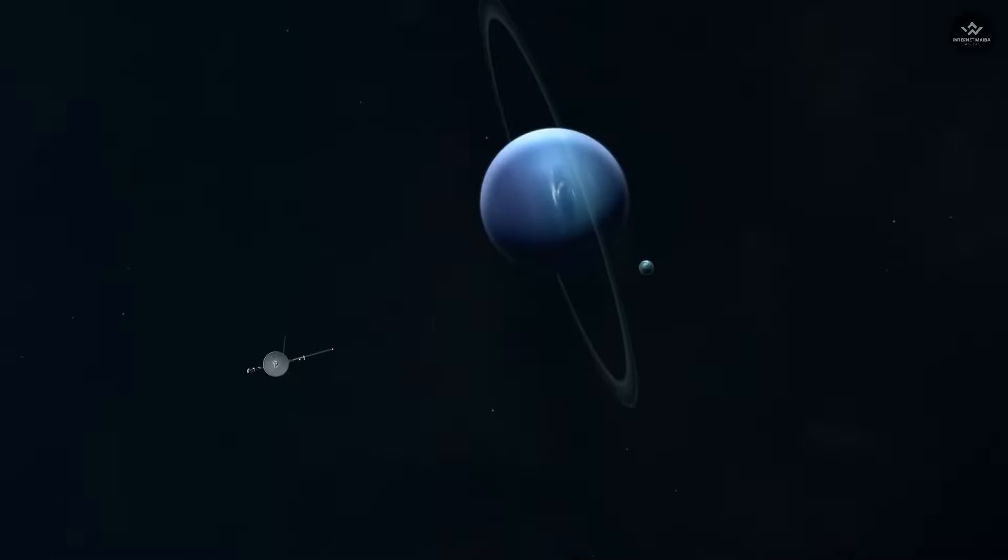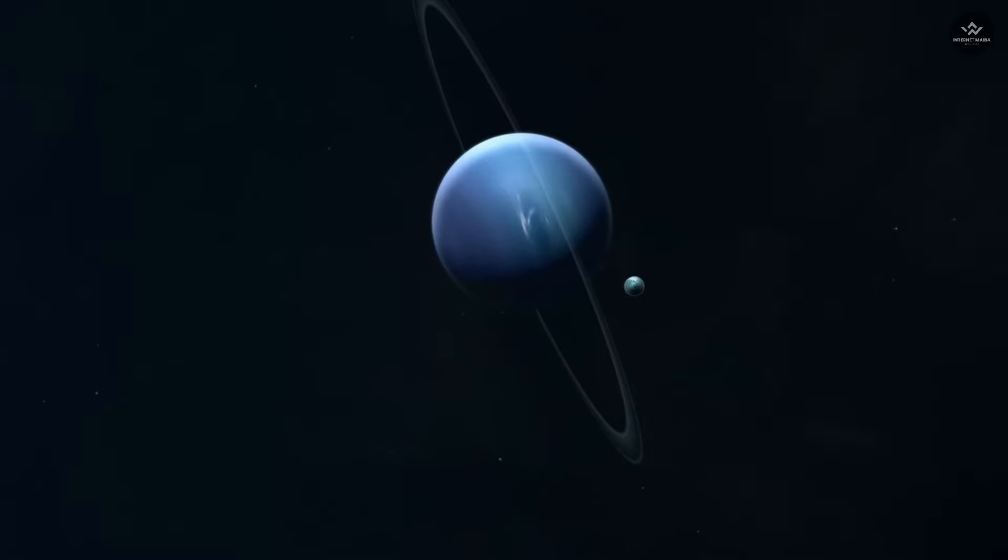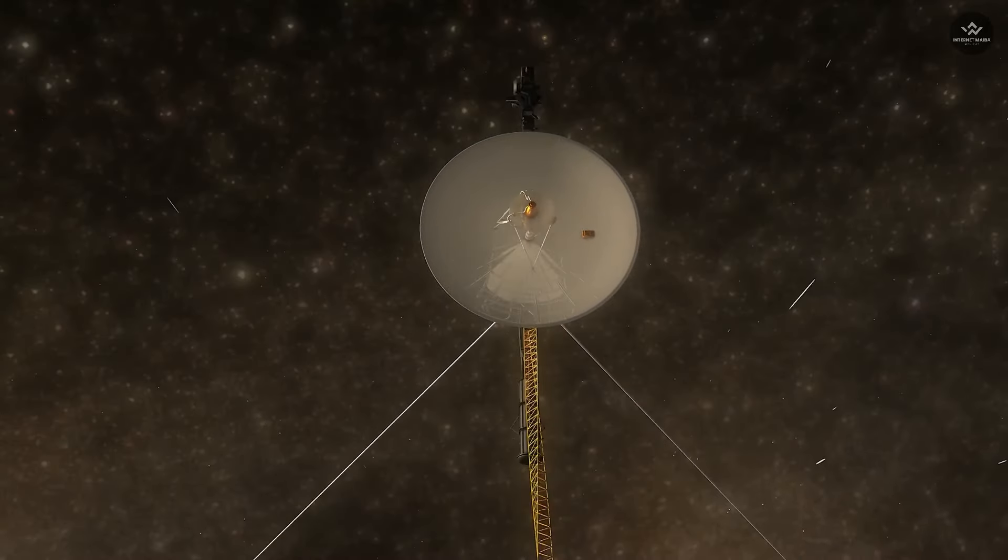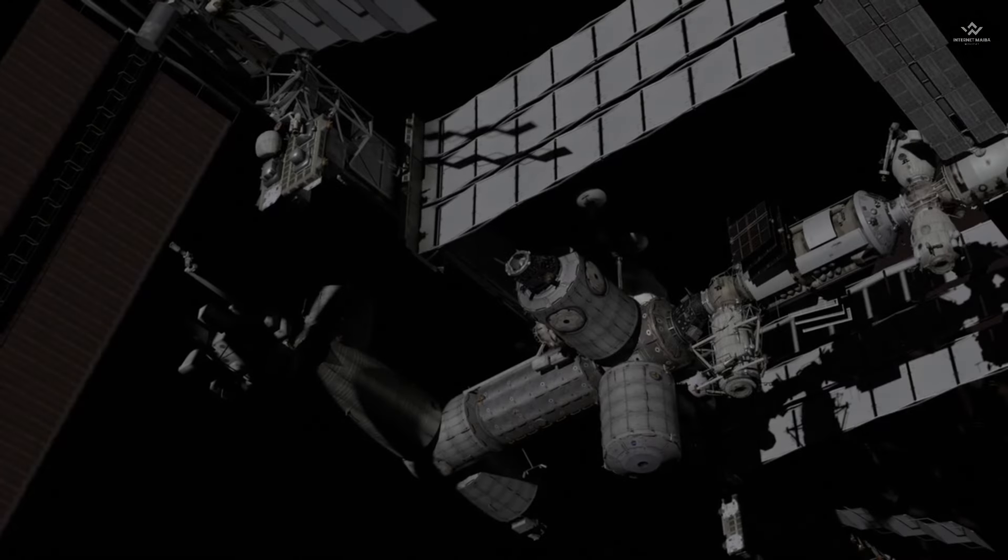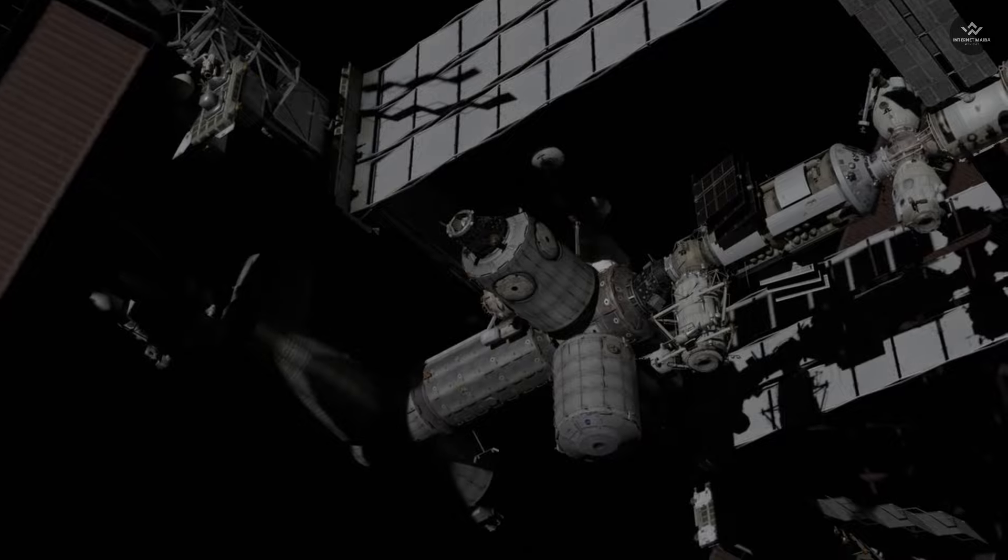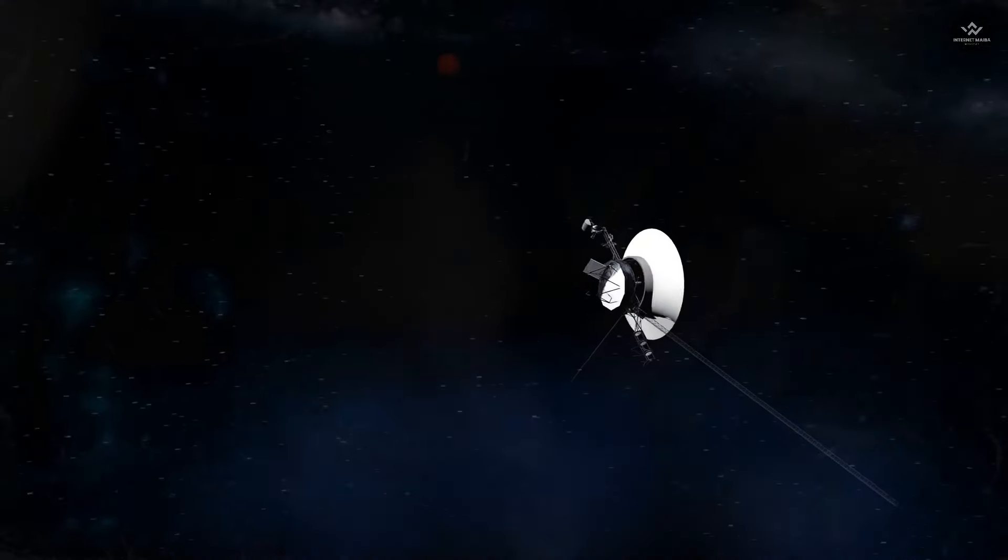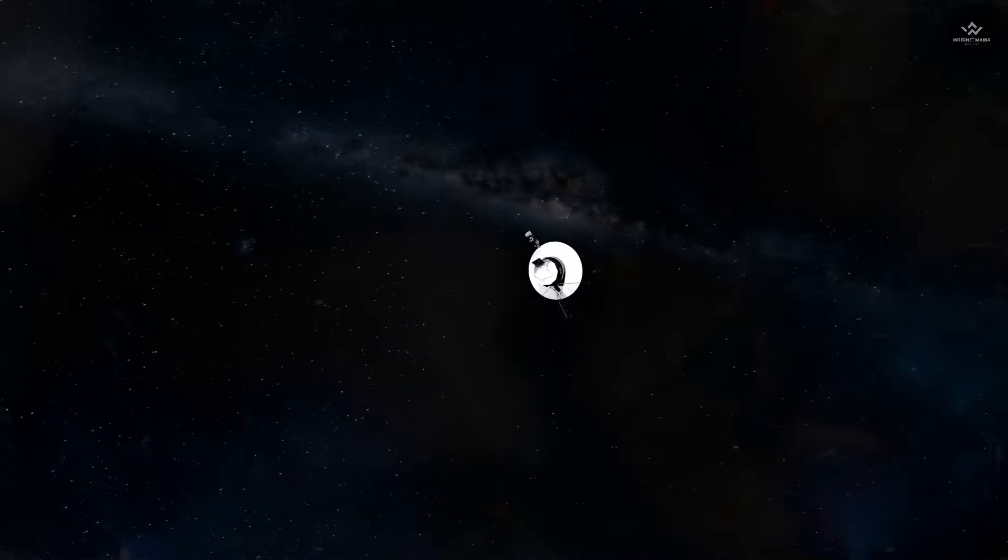In 1990, the Voyager 1 spacecraft was beyond Neptune, at the edge of our solar system. At that time, Carl Segan, the planetary scientist, asked if the spacecraft could turn around and take one last picture of Earth from that vast distance.